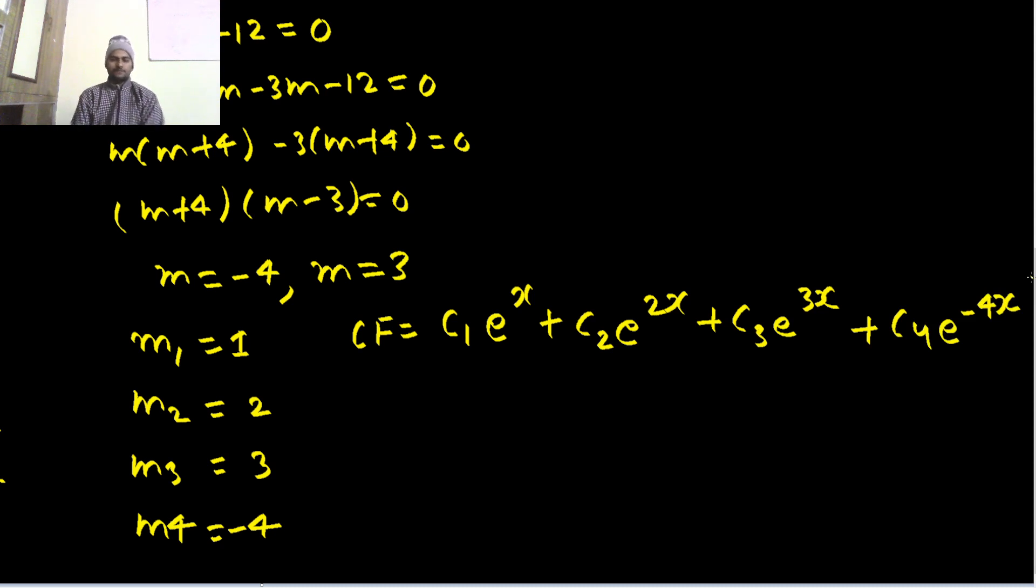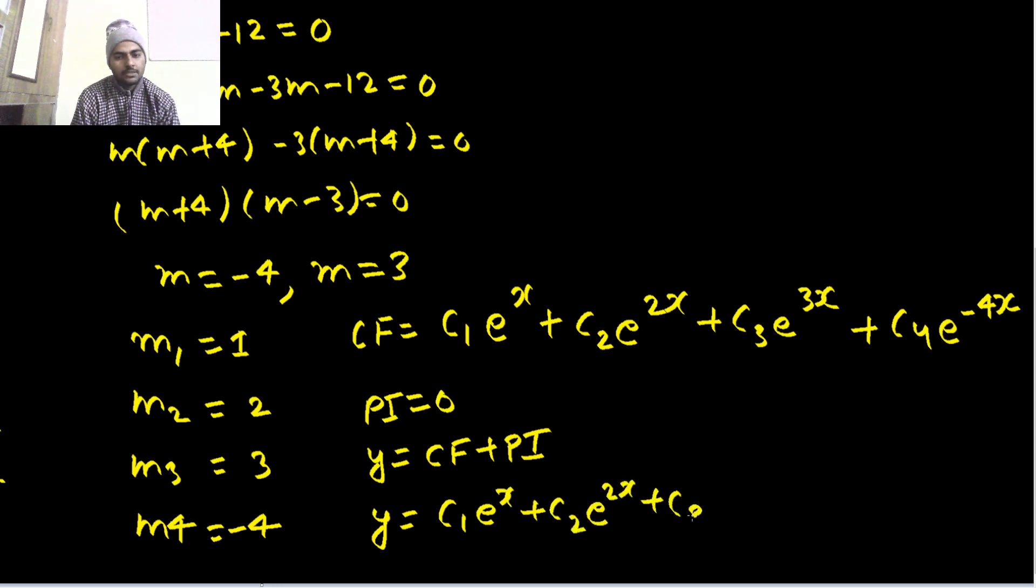This is what we've got. Now, the particular integral (PI) in this case is 0, and we know that the solution y = CF + PI. So y = C1·e^x + C2·e^(2x) + C3·e^(3x) + C4·e^(-4x).